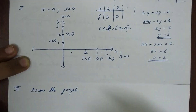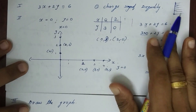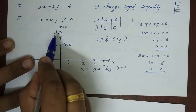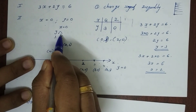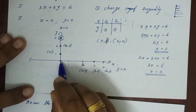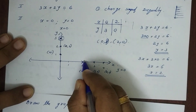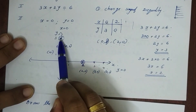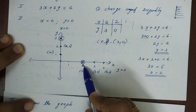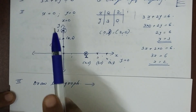Draw the graph by plotting the points. We plot (0, 3) on the y-axis and (2, 0) on the x-axis. We join these two points to form a line on the graph.